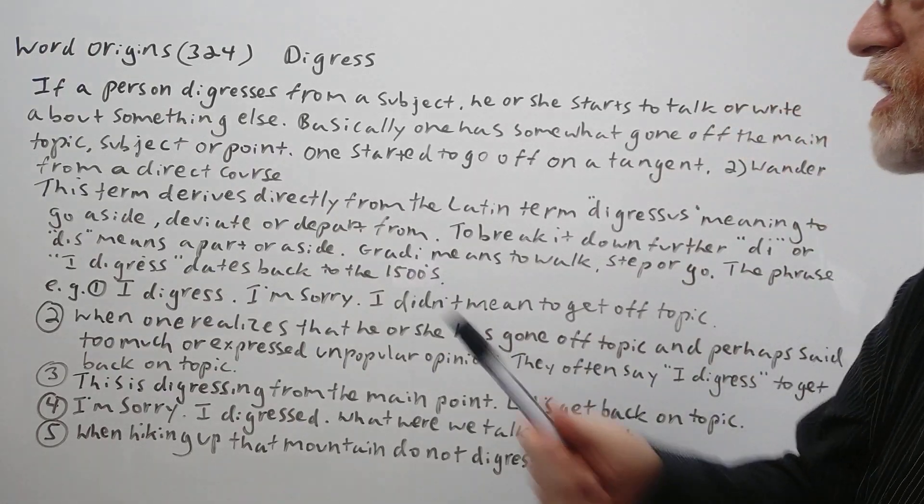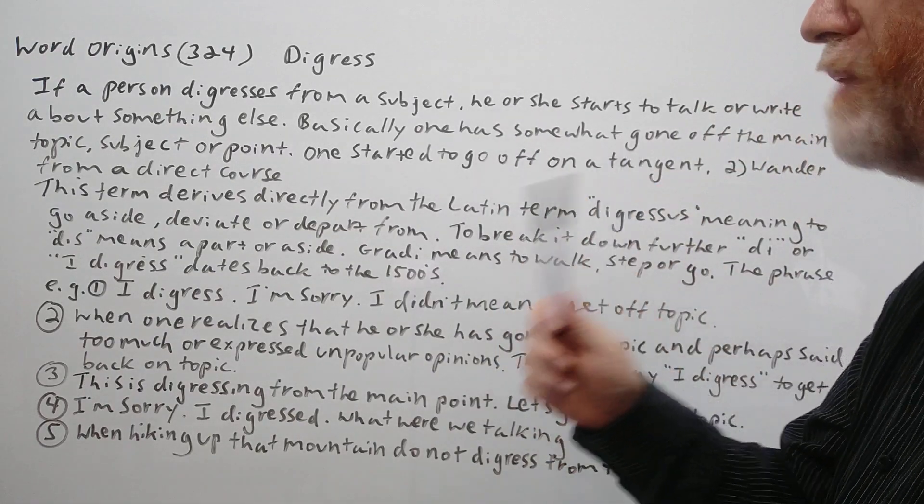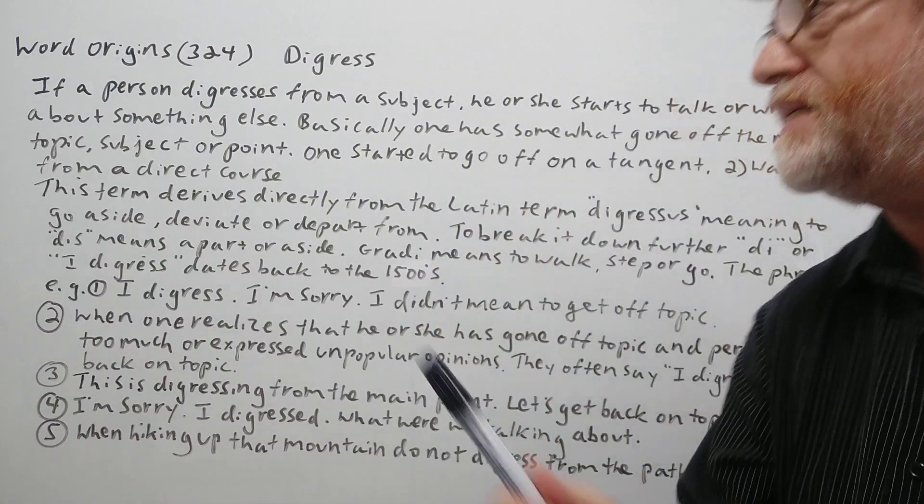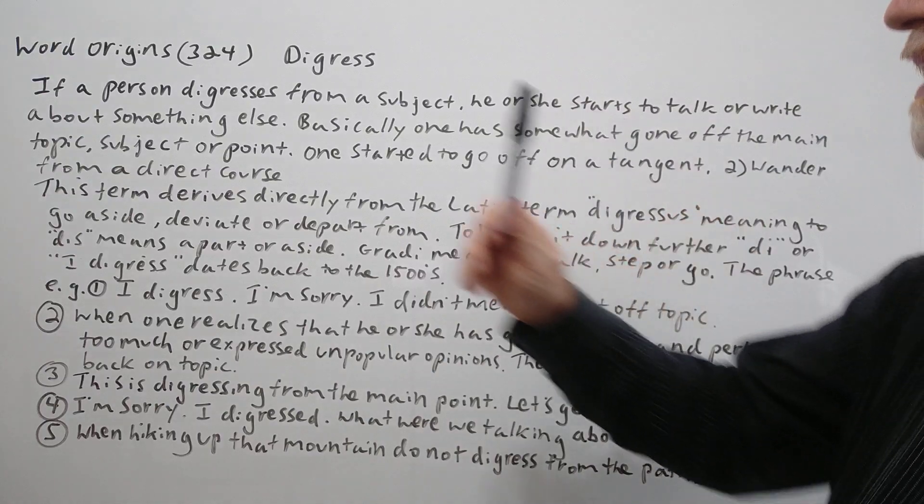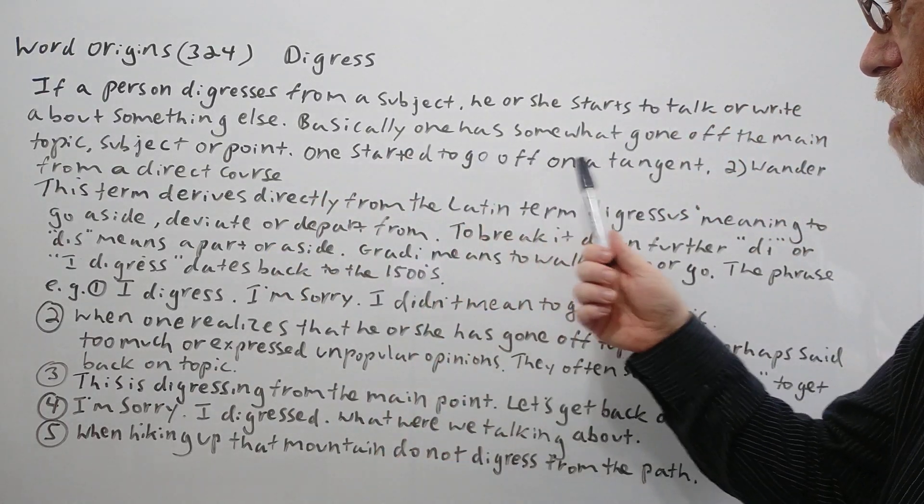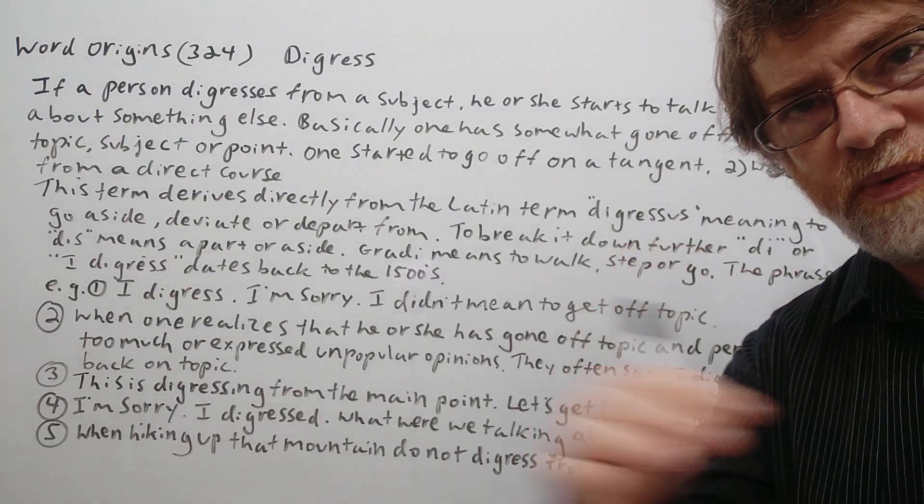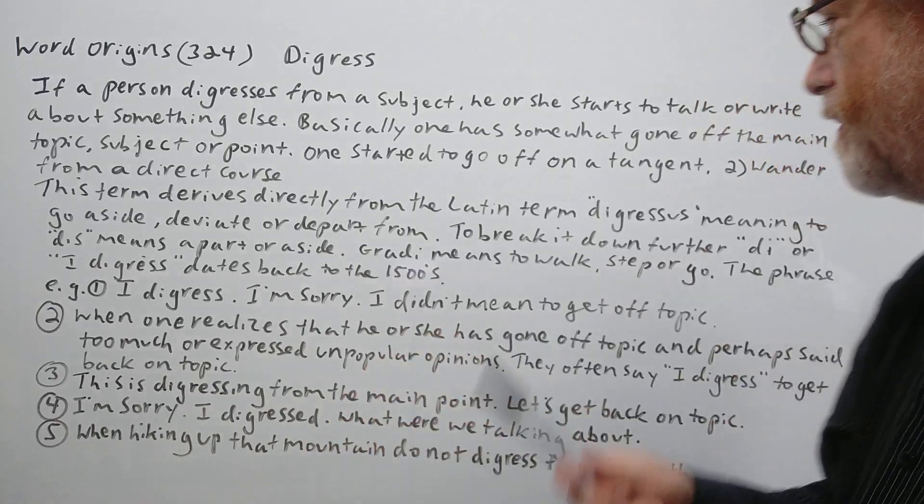If a person digresses from a subject, he or she starts to talk or write about something else. Basically one has somewhat gone off the main topic, subject, or point. One started to go off on a tangent. So that's what we mean. Go off on a tangent also means to go off the main subject that you're talking about.